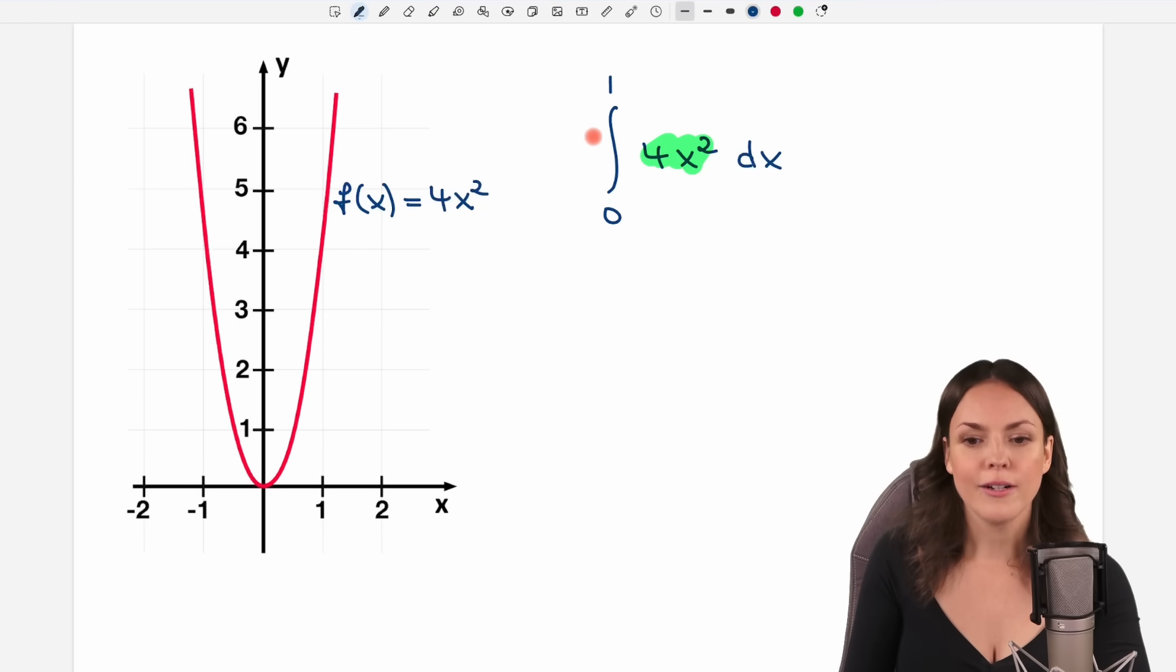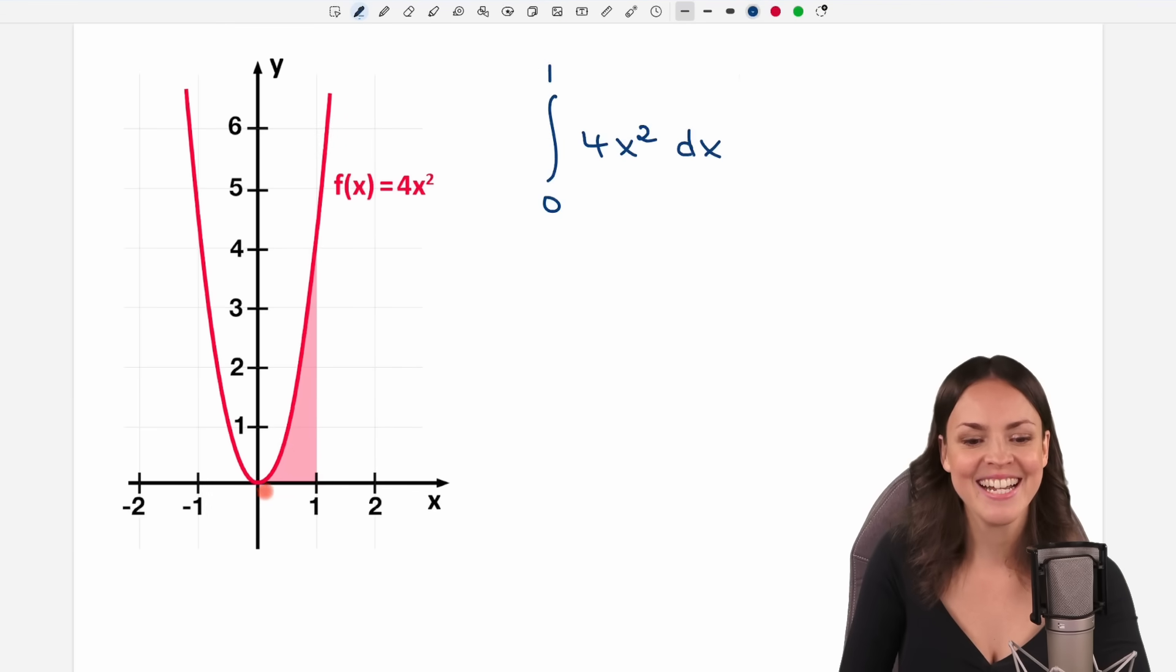If we want to find this integral, we have the limits from 0 to 1. So on the x-axis, we have to go from 0 to 1. And then we want to find with this integral the area between our red function from 0 to 1 and up to our graph.